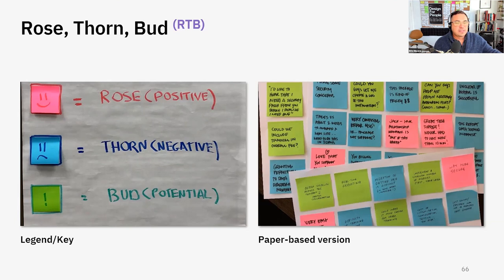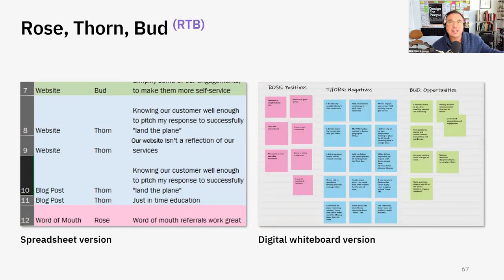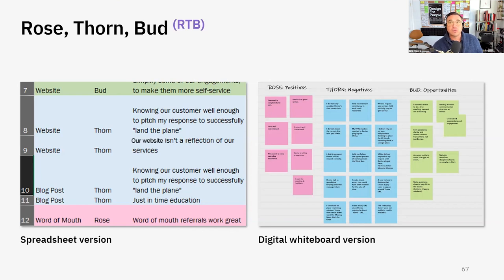What you're seeing here is a paper-based version. You can also do this on a spreadsheet — just color the cells and make your observations. This is really handy, especially if you're working with lots of people who can't go out with you and make those observations. And then on the right is a digital whiteboard version, which is the one we're going to use.